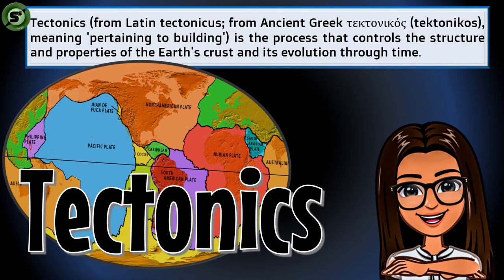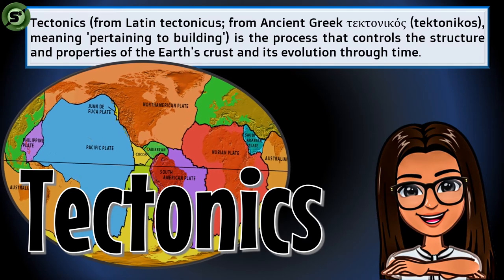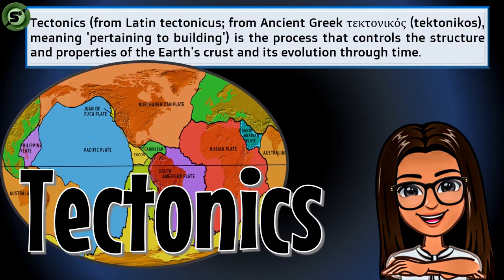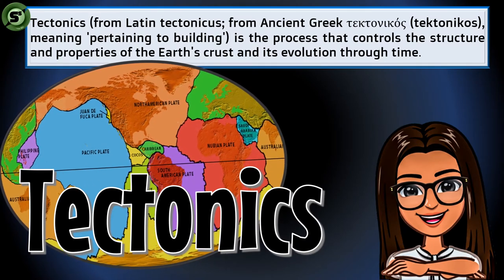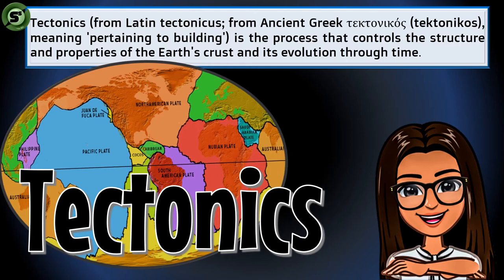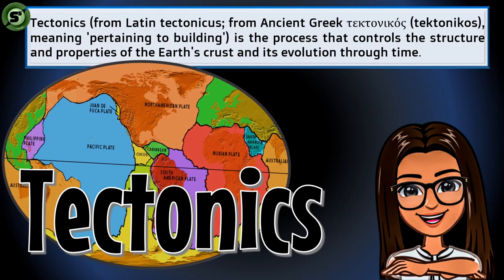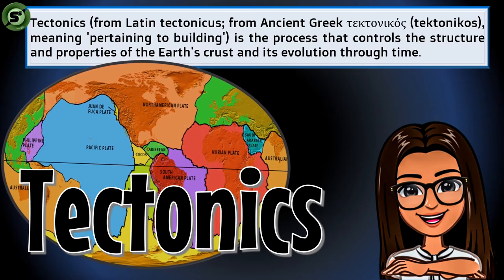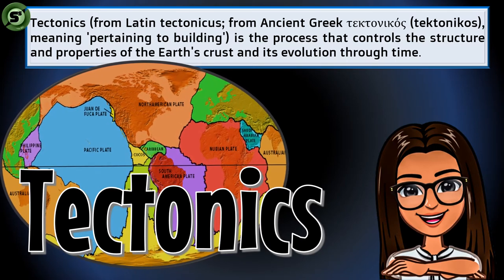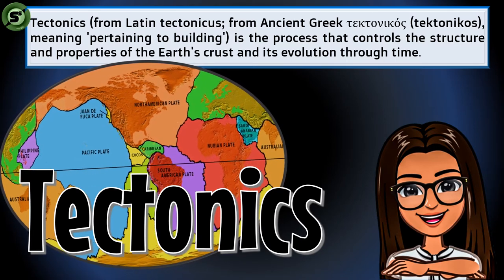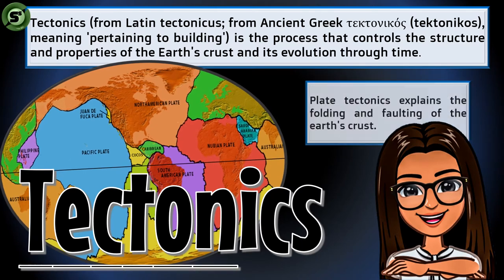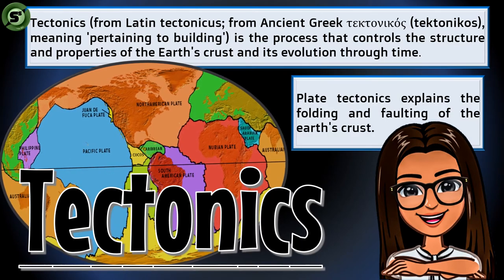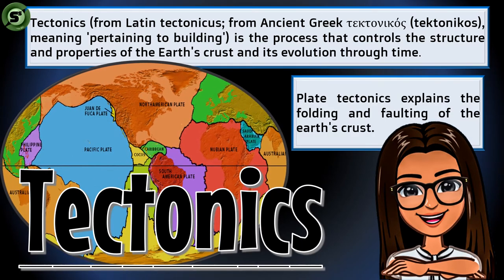Tectonics came from a Latin word 'tectonicus' and from ancient Greek 'tektonikos,' meaning pertaining to building. Tectonics is a process that controls the structure and properties of the earth's crust and its evolution through time. Plate tectonics explains the folding and faulting of the earth's crust.